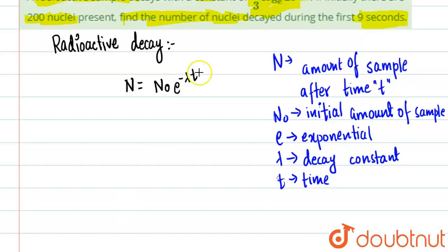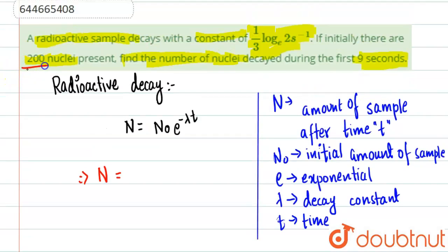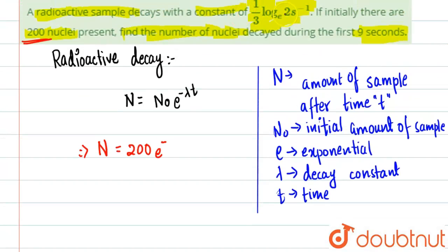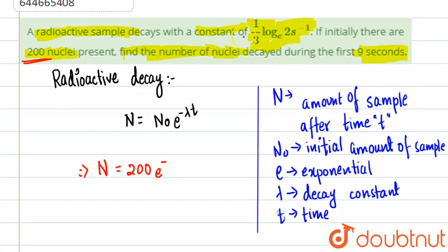Now continuing the question: we need to find N, so we leave N as is. N₀ is given as 200 nuclei, since it is the initial number. So we write N = 200 · e^(−λt), where λ is given as (1/3) · ln 2 per second.